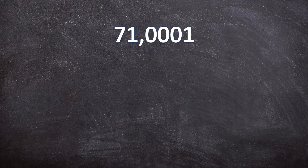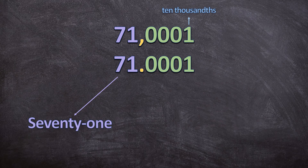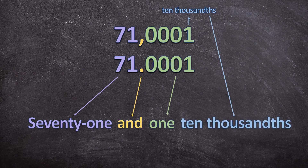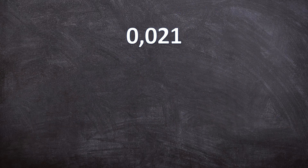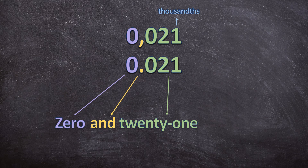For 71,0001 or 71.0001, we first determine the place value of the last decimal, which is ten thousandths, giving us 71 and one ten thousandth. For 0,021 or 0.021, the place value of the last digit, the one, is thousandths, so we read it as zero and 21 thousandths.